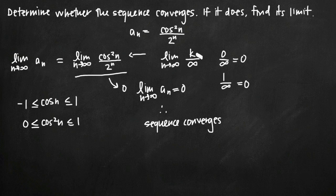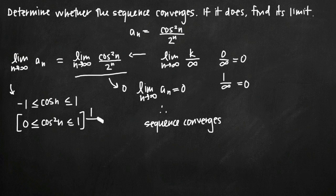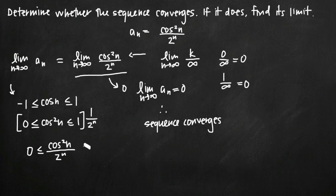If you want to prove without the limit that the sequence converges, you can always try to use something like the squeeze theorem, and it would look something like this. We said cosine of n is always greater than or equal to negative 1 and less than or equal to 1. We squared cosine of n to get 0 ≤ cosine squared of n ≤ 1. Now if we multiply through by 1 over 2 to the n — because we're trying to get the middle function back to our original sequence — we get: 0 ≤ cosine squared of n over 2 to the n ≤ 1 over 2 to the n.